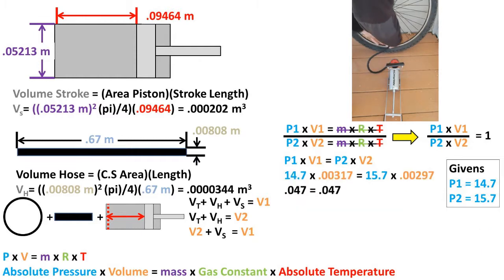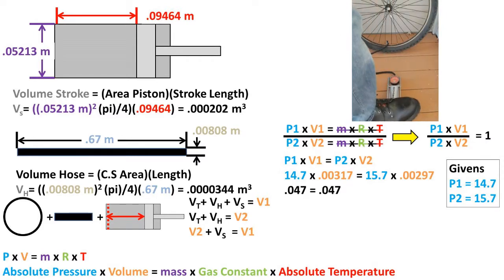To check your work, you can plug in P1, V1, P2, and V2 into the P1 times V1 equals P2 times V2 equation. Both sides should give you the same value.